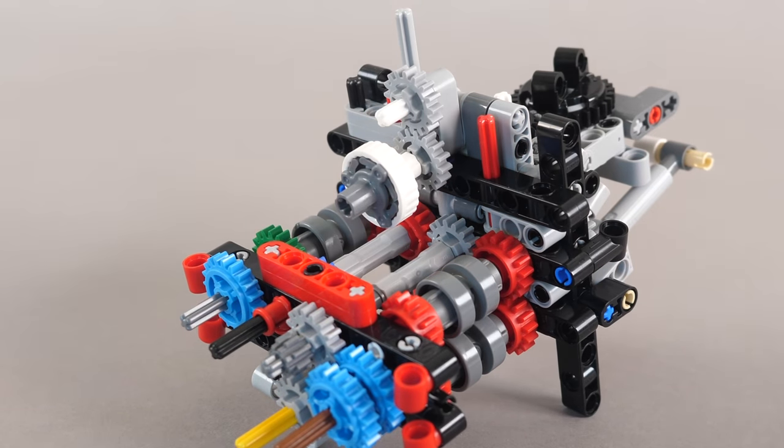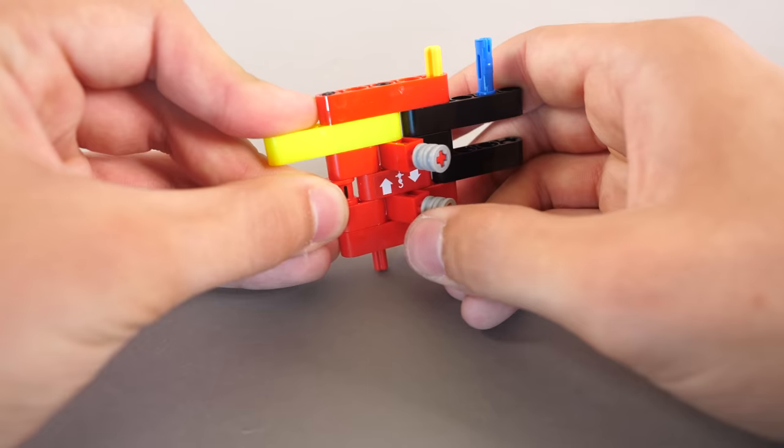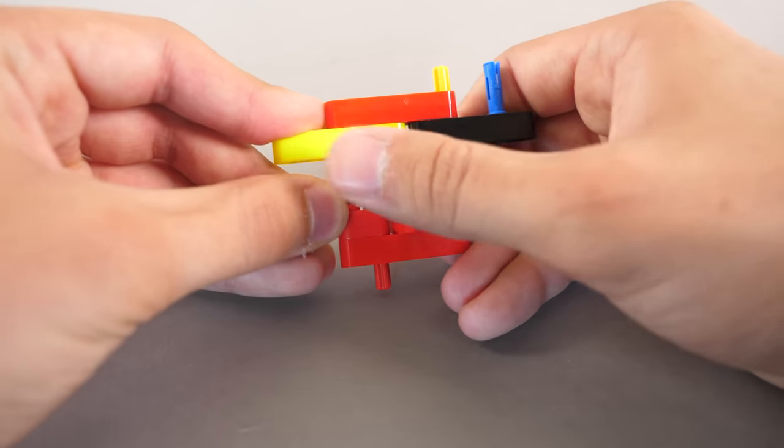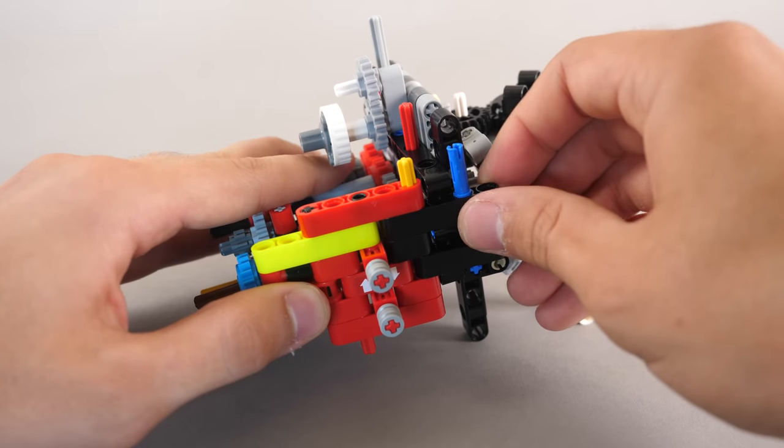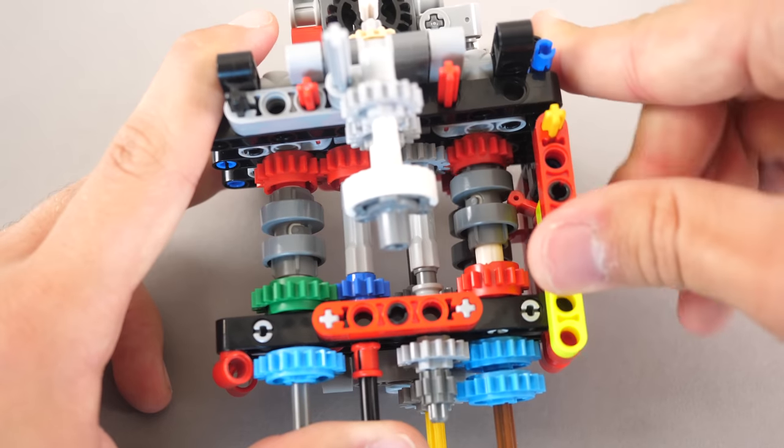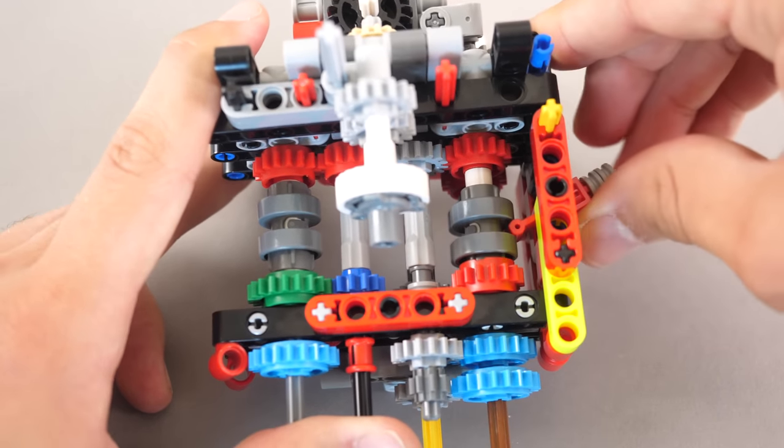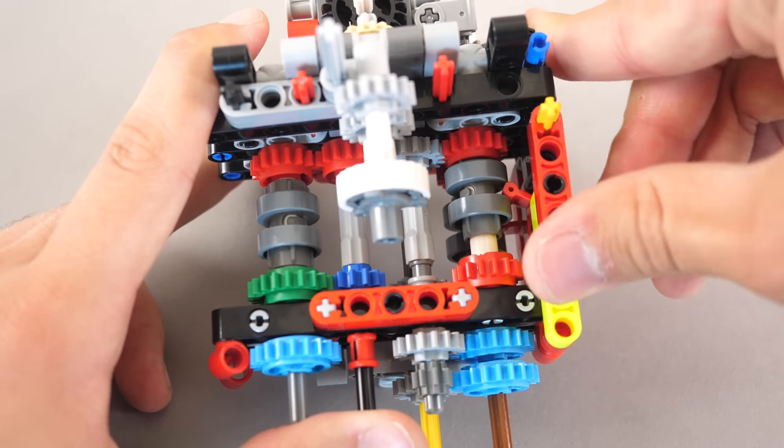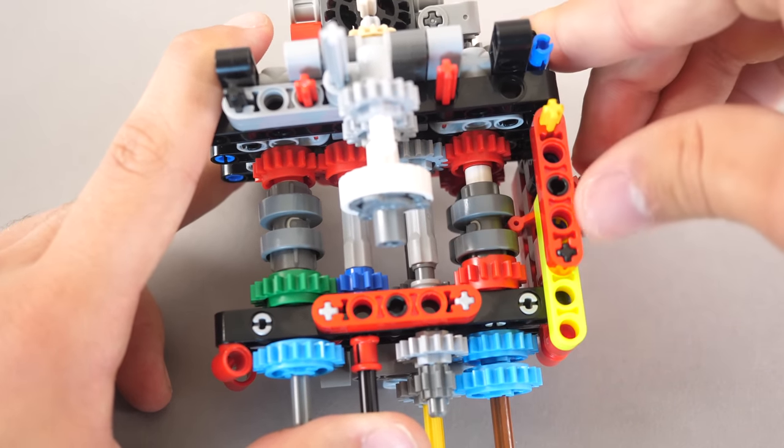Now, we secure the linear clutch onto the gearbox, and this part will be responsible for the main propeller. We build this little module with the changeover catch switches, and we simply secure it onto the gearbox. Make sure that the switches are properly aligned with the driving rings, otherwise the gearbox will not work.